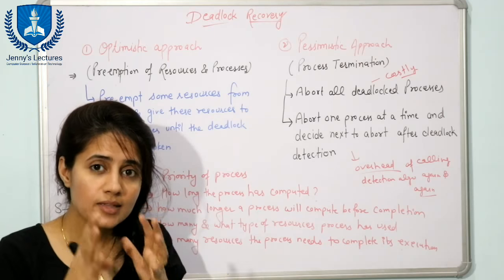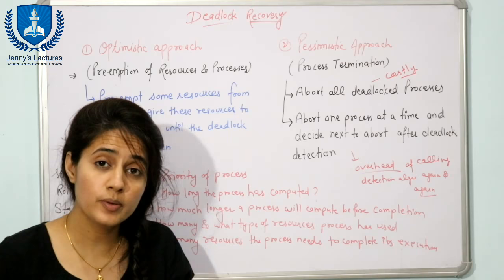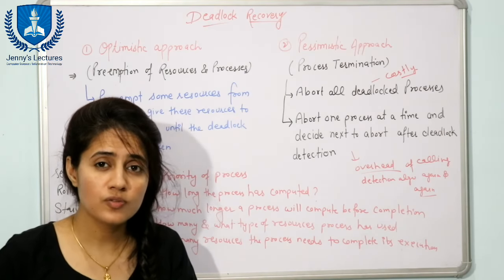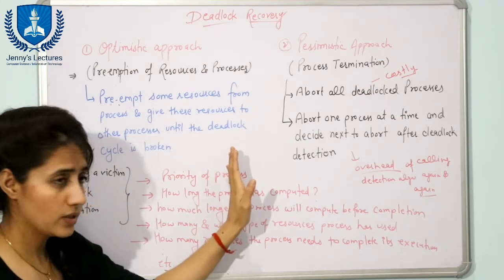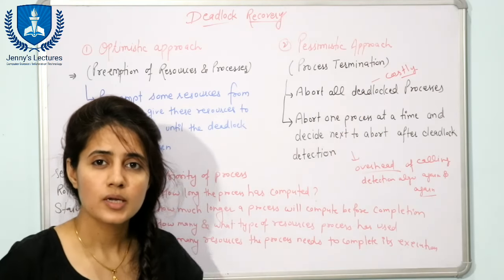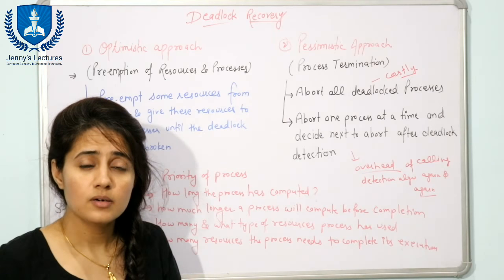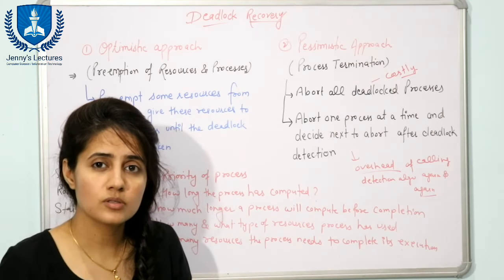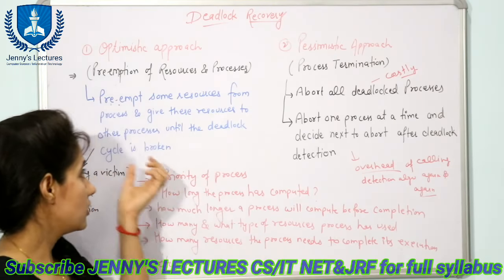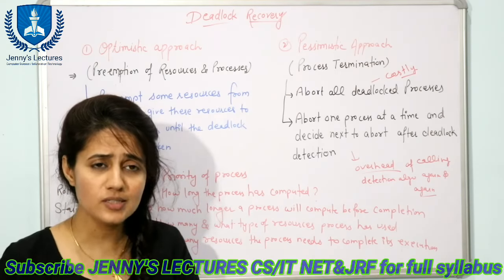We select the process that will cause minimum cost to the system and preempt resources from it. Minimum cost is determined by several cost factors — similar to those considered during process termination — such as the number of resources a deadlocked process is holding. These cost factors guide the selection of the victim process.